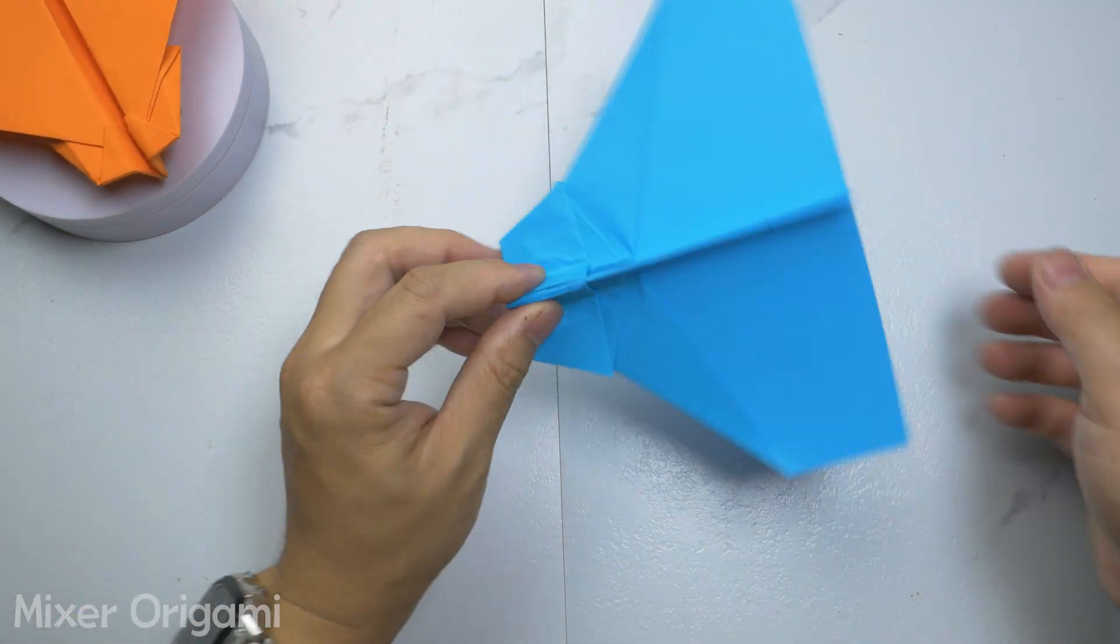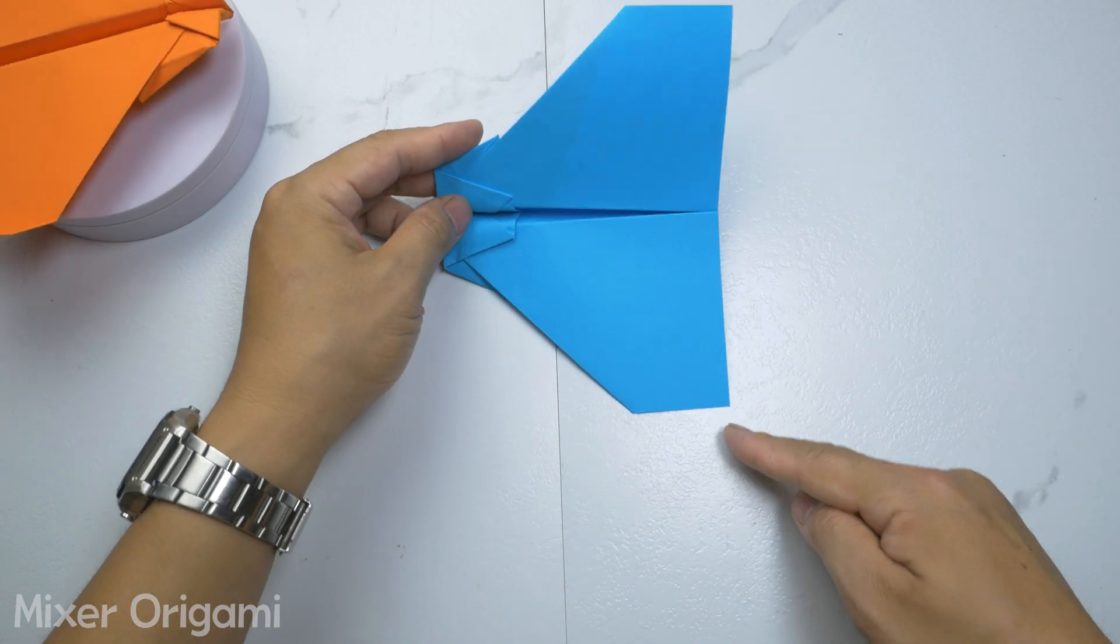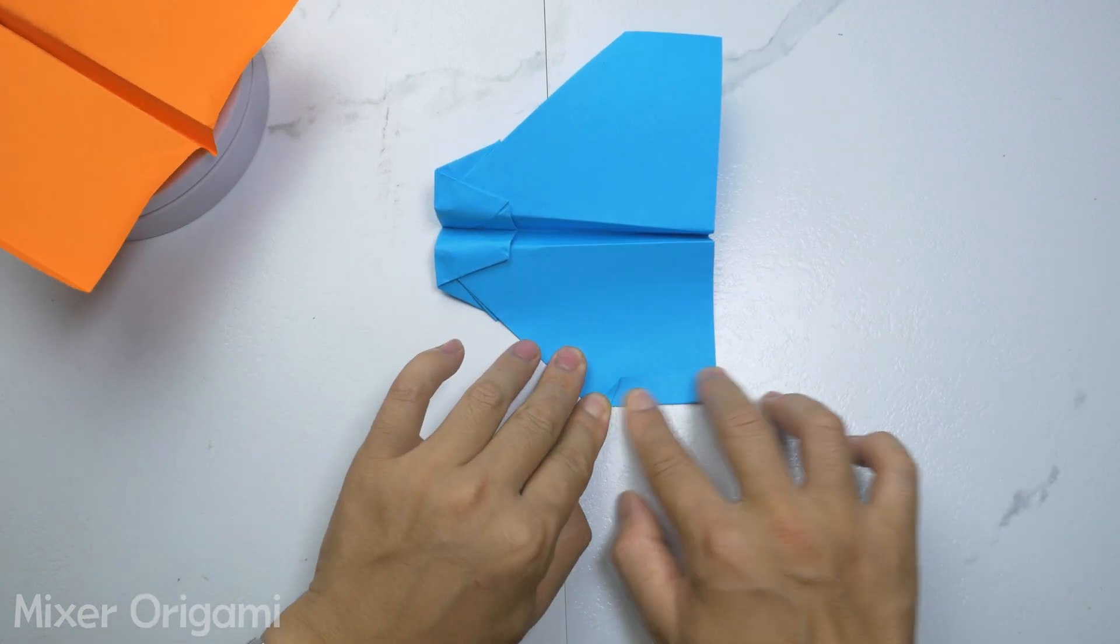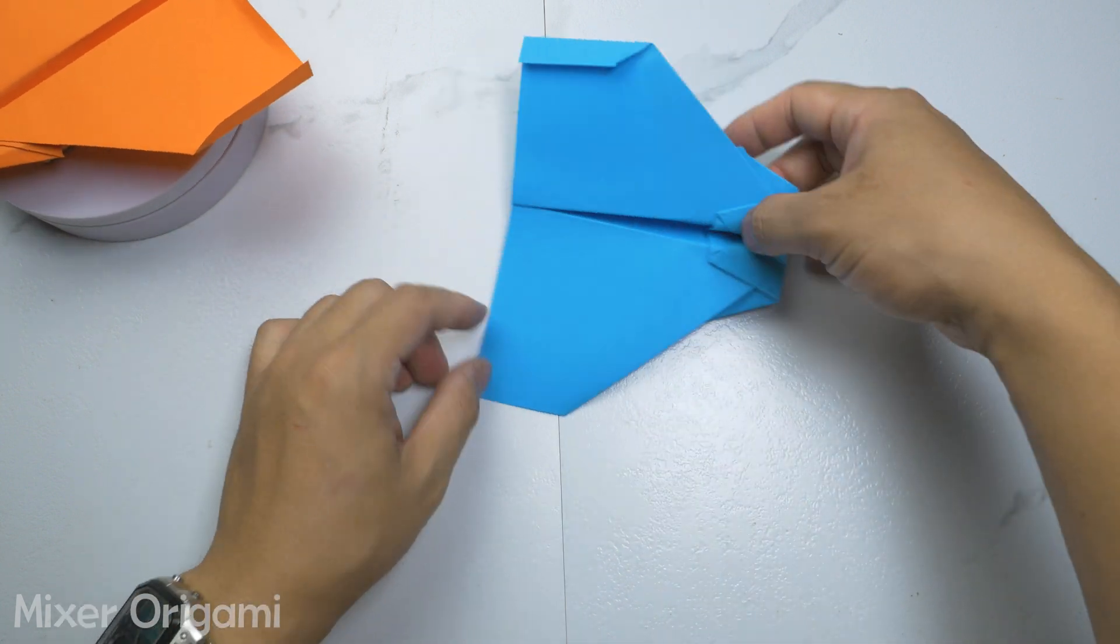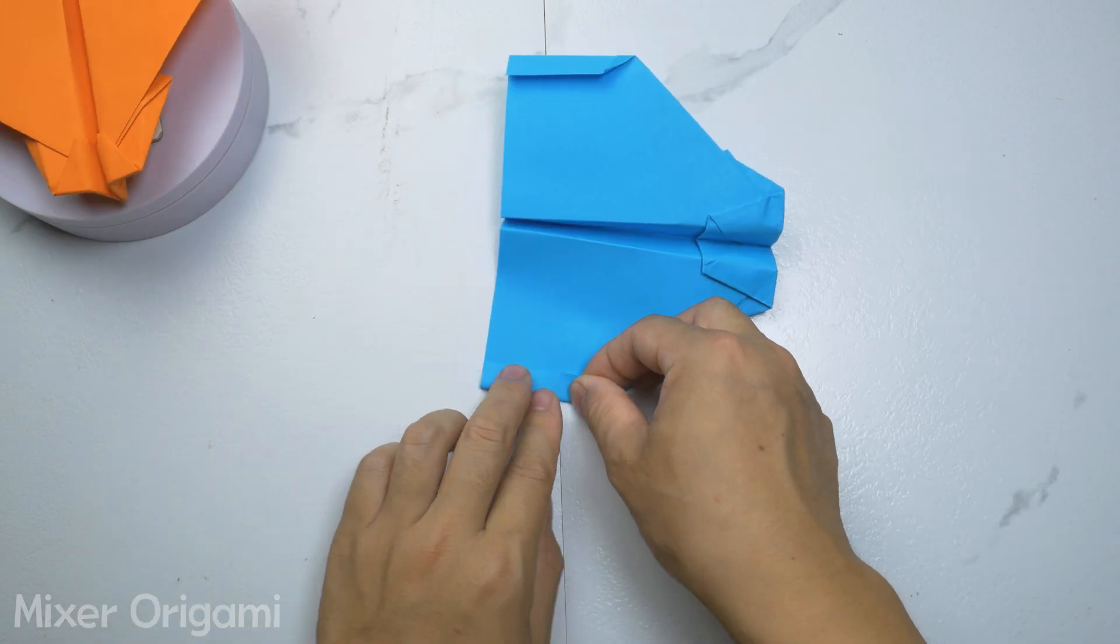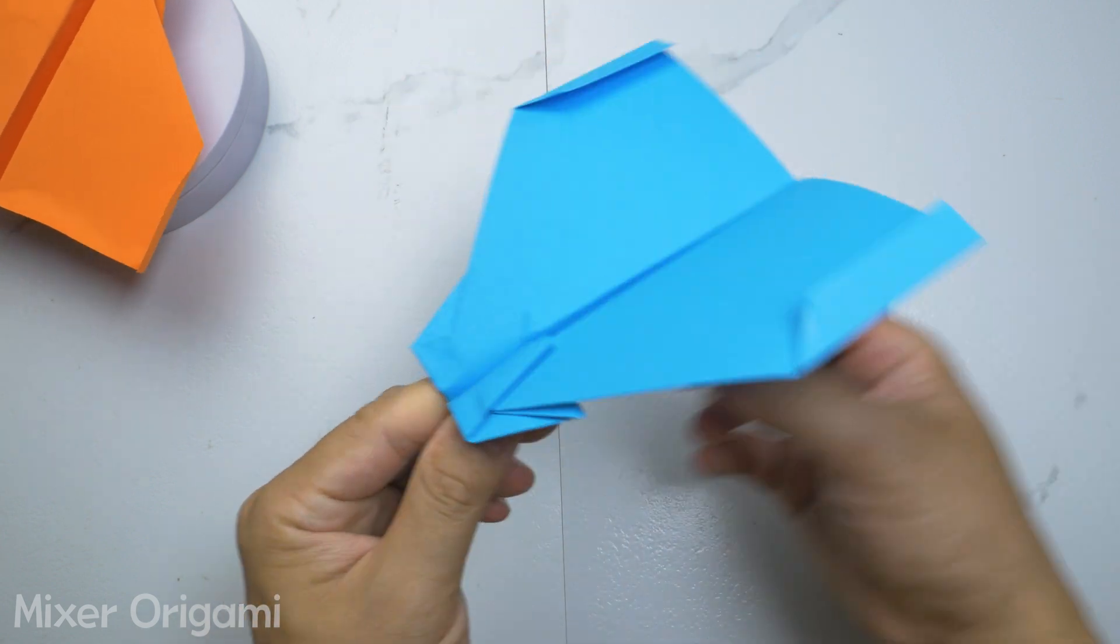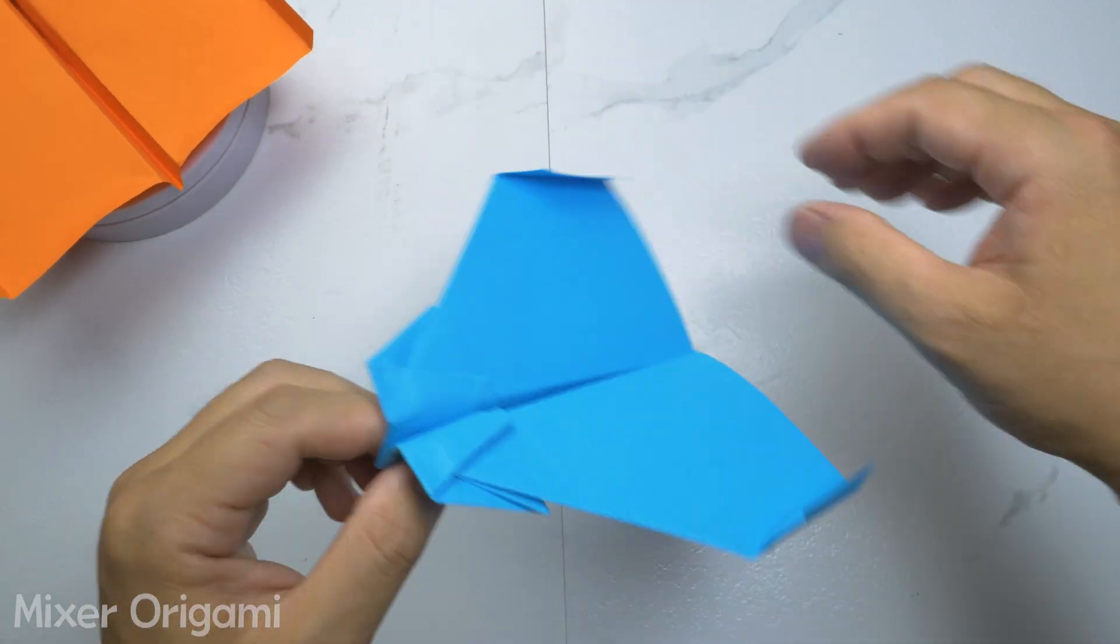Here are the instructions for throwing the airplane and how to play. Rule 1: Always throw the airplane at an angle of 20-30 degrees from the horizontal plane. Do not throw the airplane vertically as it will not fly back to you. Rule 2: The direction of throwing the airplane should be diagonally to the left or right. Do not throw the airplane straight ahead.